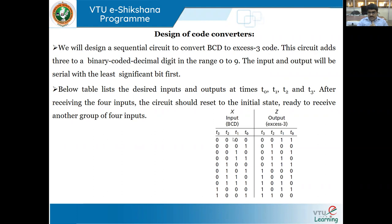If I add three to each BCD number, I get the corresponding excess-3 output — so 0000 becomes 0011, and so on. The output is defined for each state. At t0, depending upon the x input, after time t0 my output z is determined. This table shows the desired inputs and outputs at times t0, t1, t2, and t3.